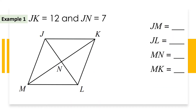Let's look at this example. We want to find the lengths of sides JM, JL, MN, and MK. I like to label everything given: JK is 12, so all sides are 12 because they're all equal. JN is 7, so NL is also 7.